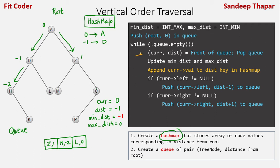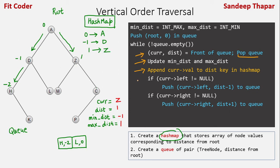In the next iteration, front of the queue is Z, so current becomes Z and distance becomes 1, then we pop. We update maximum distance to 1; minimum distance remains minus 1. We append Z to the key 1 in the hash map. Left of Z is M, so we push M comma 0 to the queue. Right of Z is C, so we push C comma 2 to the queue.